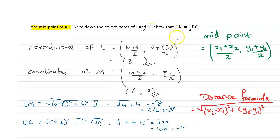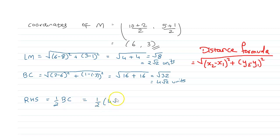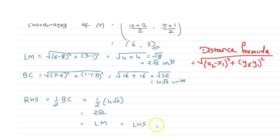Now in the proof we require to prove LM is half of BC. Starting with the right-hand side: half of BC gives half of 4√2, which is 2√2. And we have obtained 2√2 as the length of LM, which is the left-hand side. Hence we have proved that LM is half of BC.